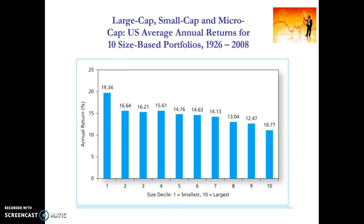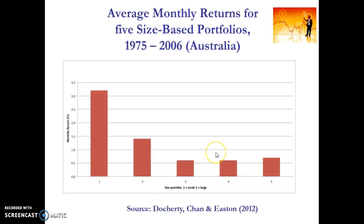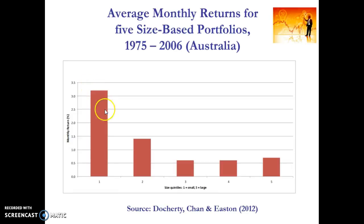That was evidence from the United States. In the Australian market, studies have looked at the same issue. Here we have size-based quintile portfolios across the period 1975 to 2006. Quintile portfolios are five portfolios, and once again we see this same phenomenon. Average monthly returns of the smallest quintile of stocks are very high and decrease substantially for other quintiles. In Australia, the size effect really appears to be driven by the smallest segment of the market.